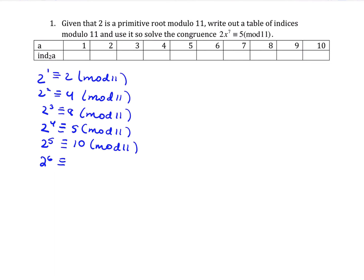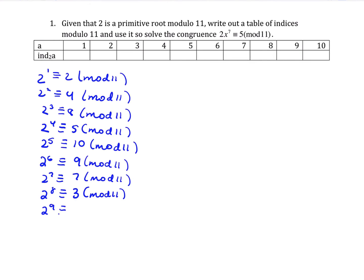2 to the 6th is going to be 2 times 10, which is 20, reducing to 9. 2 to the 7th is 2 times 9, which is 18, reducing to 7 mod 11. 2 to the 8th is congruent to 2 times 2 to the 7th, which is 14, reducing to 3 mod 11. 2 to the 9th is 2 times 3, or 6 mod 11. 2 to the 10th is 2 times 6, which is 12, reducing to 1 mod 11.